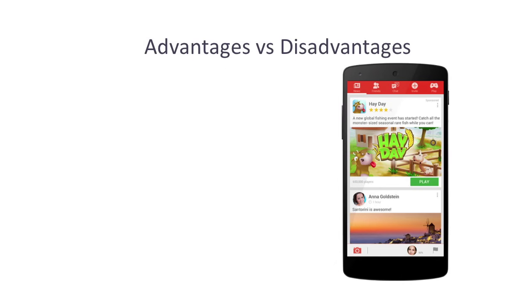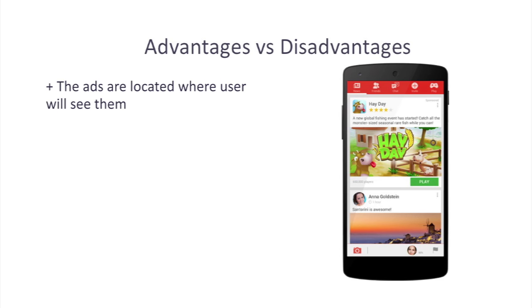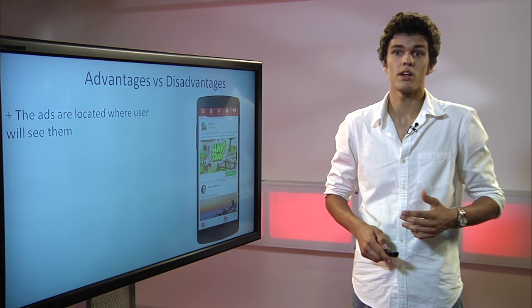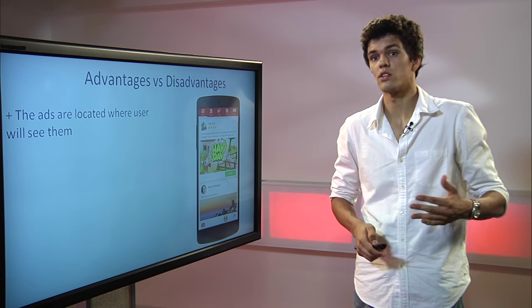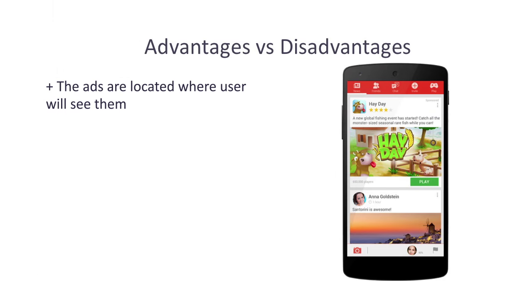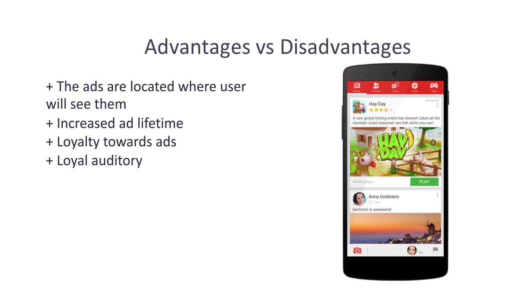Pros and cons of native ads. One of the biggest pros is that the ads are located right inside the app, and the user sees them and treats them as part of the content — it doesn't annoy them as much as it does with banners and interstitials. Therefore, since the ads are not so distracting, the ad lifetime of your native ad will increase, your audience will build up, and it will be very loyal towards your ads.